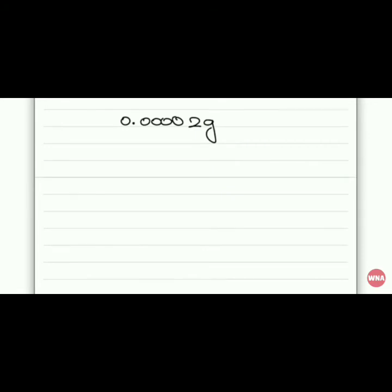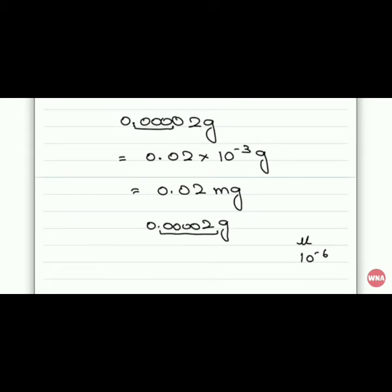Now we have the number 0.002 grams. We need to write this decimal. If we shift the decimal 3 points, then we will write 2 times 10 to the power minus 3 grams. Because we have shifted from left to right, we put minus 3. For 10 to the power minus 3, there is a prefix milli. So it will become 0.02 milligrams, or 20 micrograms.